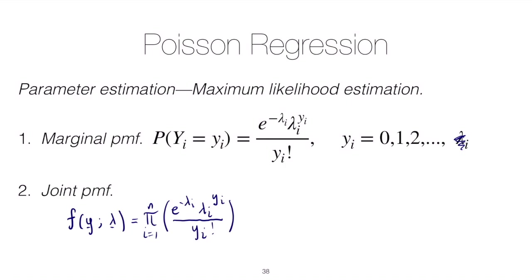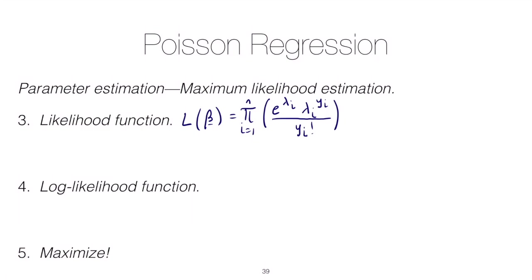Alright, so from the joint PMF we can write down the likelihood function. The likelihood function is basically the joint PMF just interpreted as a function of the parameters.